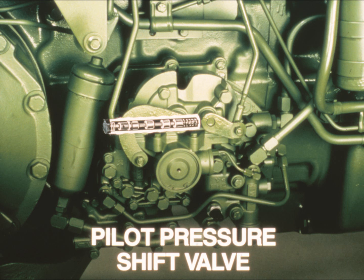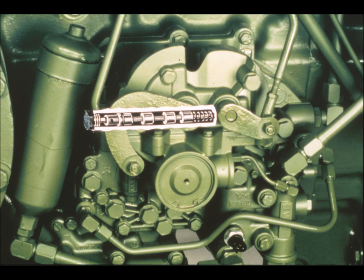The pilot pressure shift valve works with the rotary valve. It goes to work when the operator shifts from forward to reverse. The spring on the right end keeps it in its normal position — forward. When the operator shifts into reverse, pilot oil from the forward-reverse valve shifts this valve to the right, which assists the rotary valve in selecting reverse speeds.